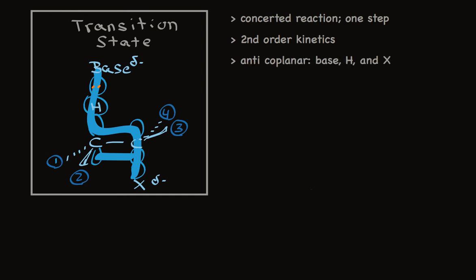In addition, as we've already said, all the atoms line up in the same plane. This is called coplanar, and they adopt an anti-arrangement. The base is sticking up in one direction, while the halide is sticking out in the opposite direction. This lets the partial negative charge on the halide and the partial negative charge on the base be as far apart as possible. This point turns out to be really important when we talk about stereochemistry.